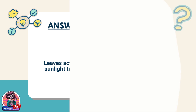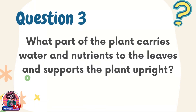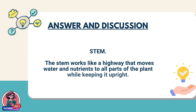Question 3. What part of the plant carries water and nutrients to the leaves and supports the plant upright? Answer: Stem. The stem works like a highway that moves water and nutrients to all parts of the plant while keeping it upright.